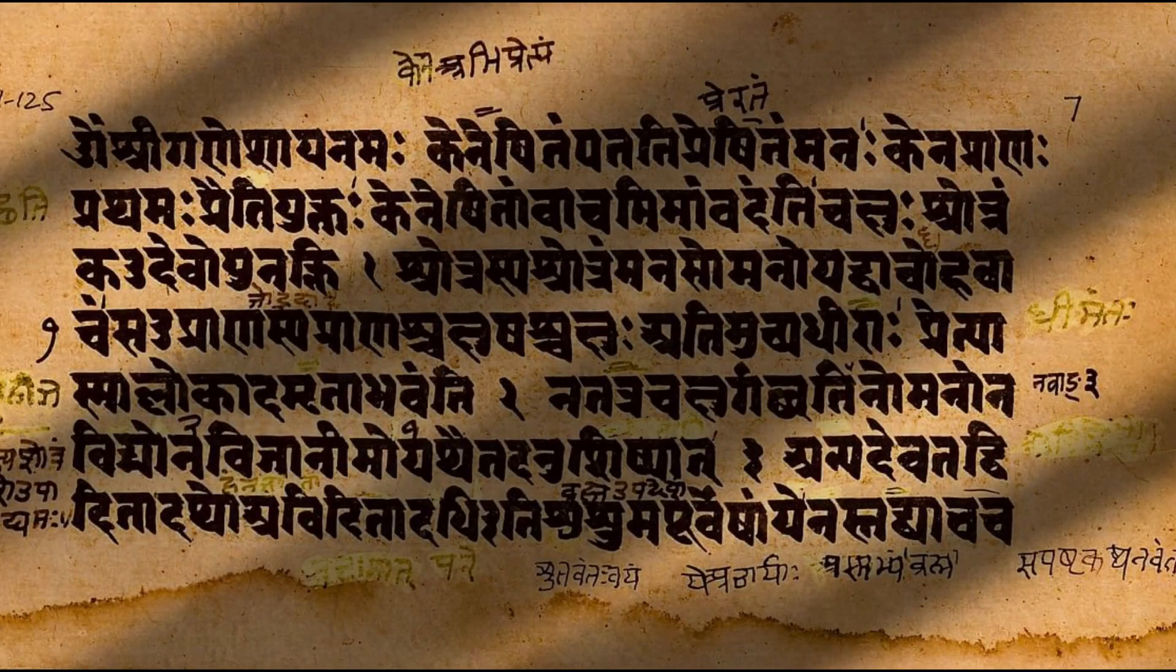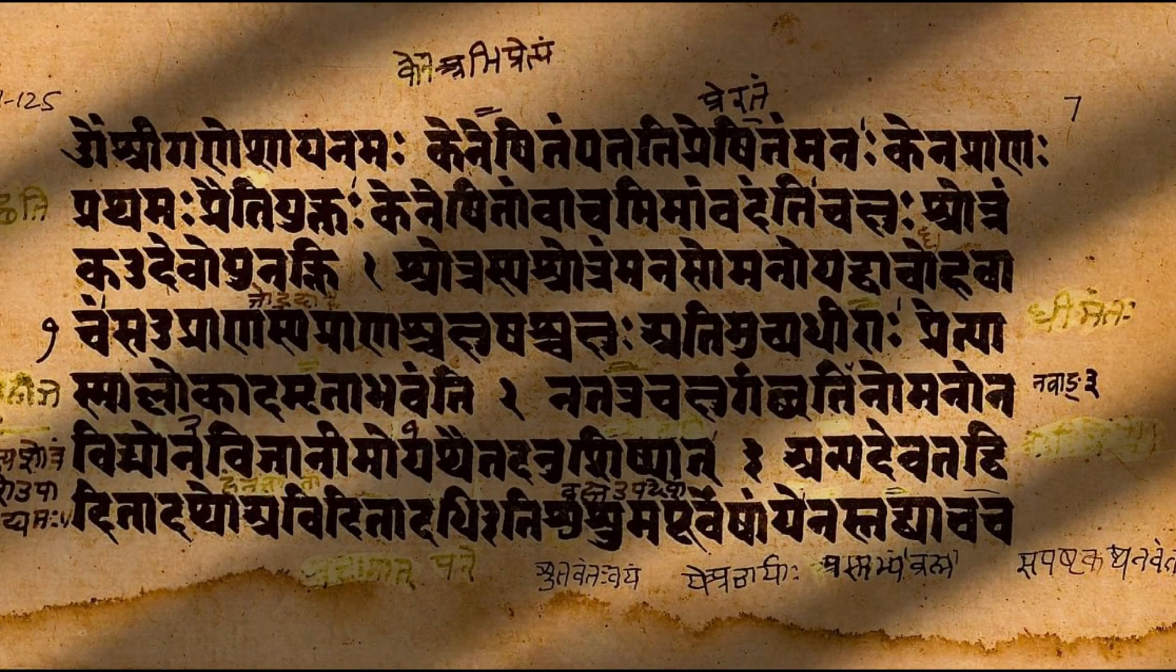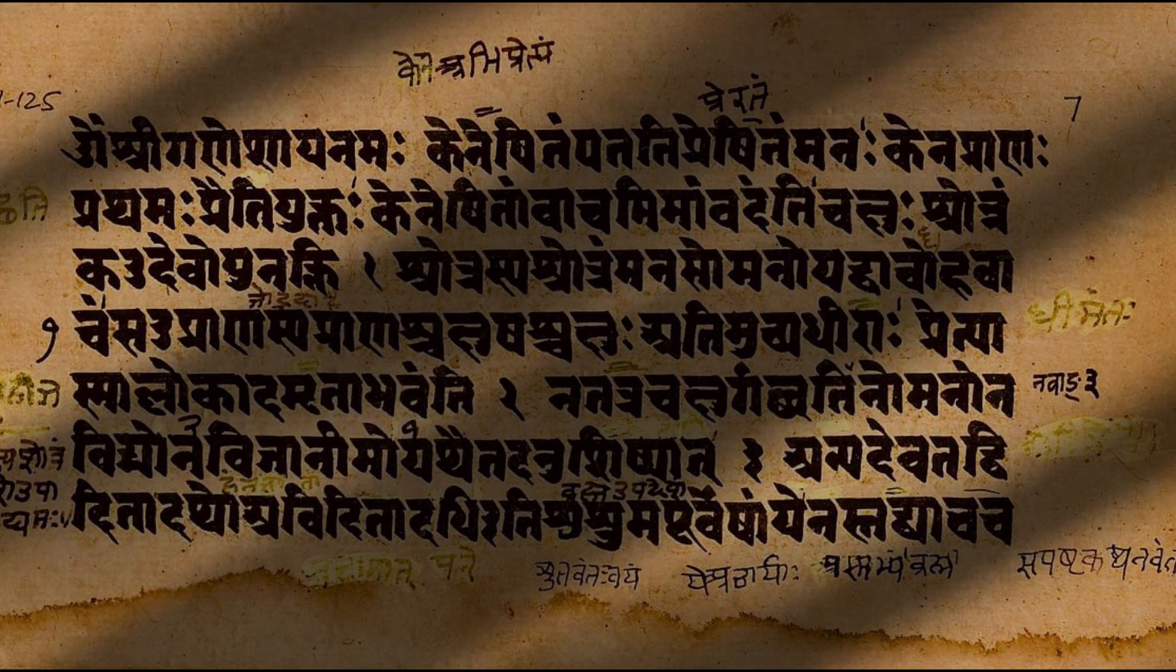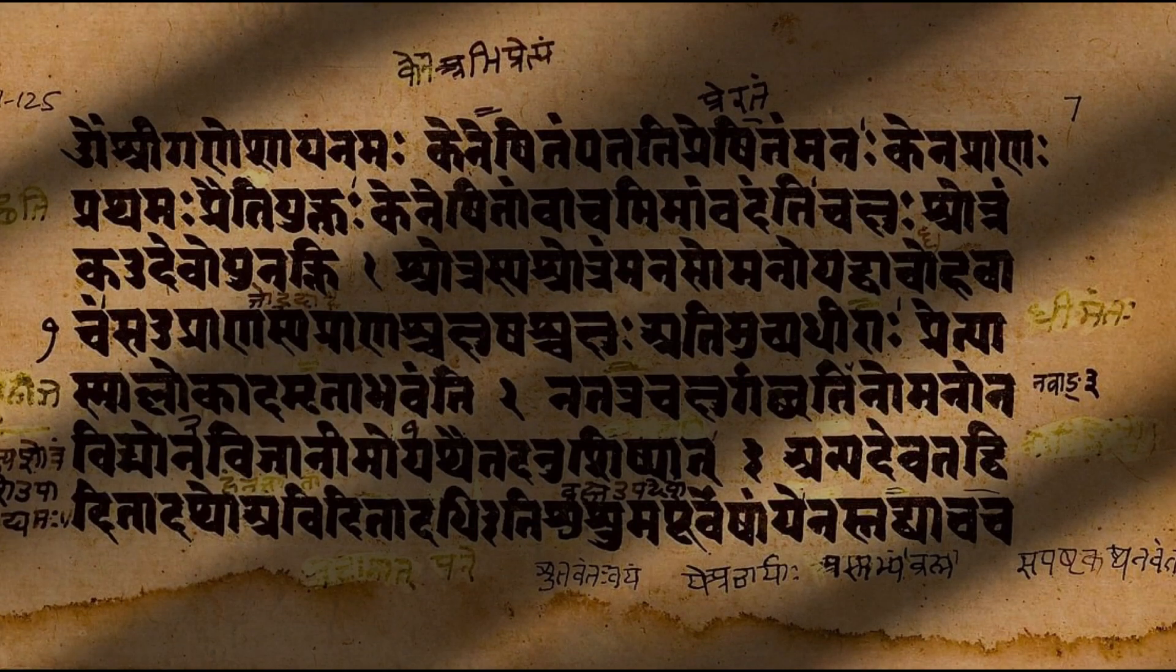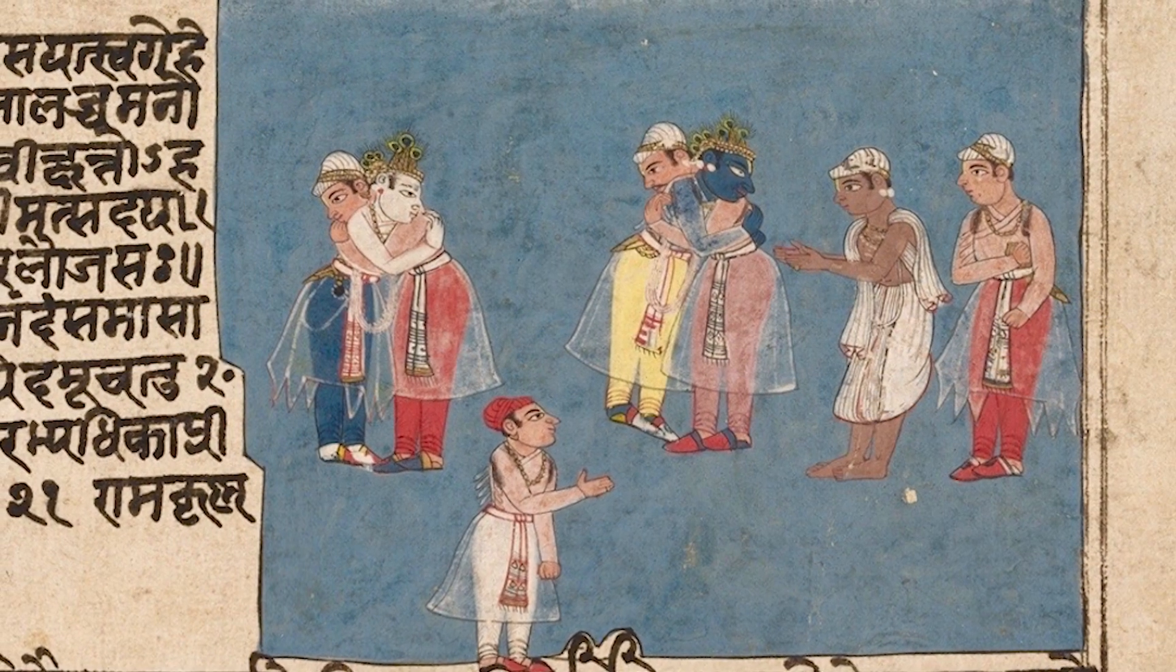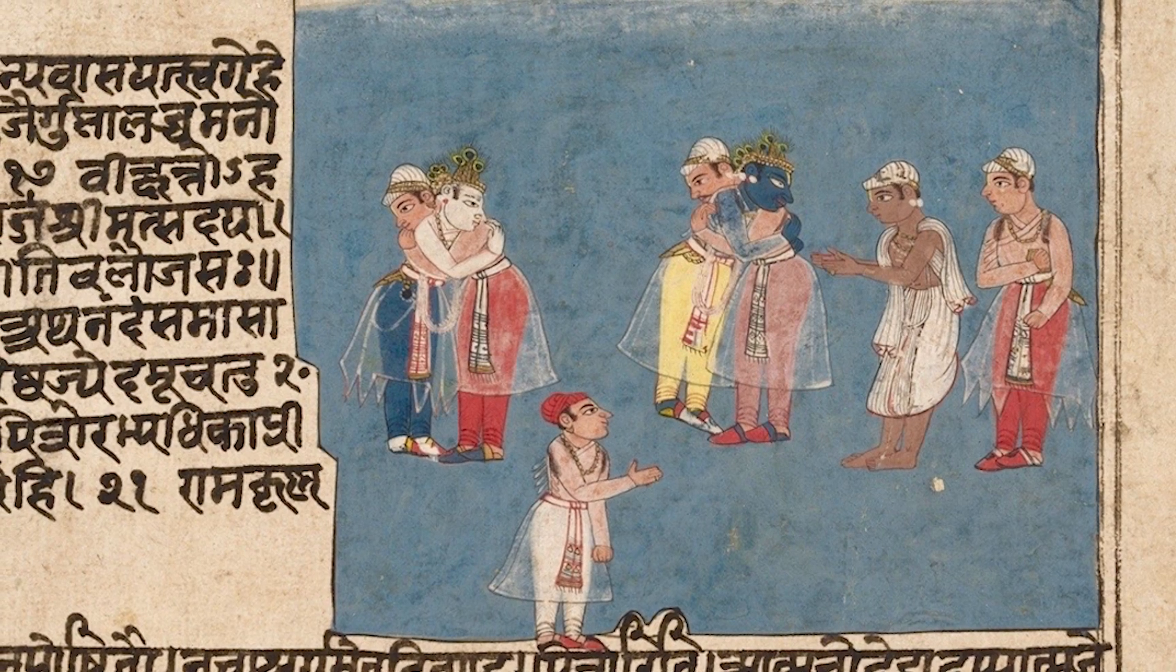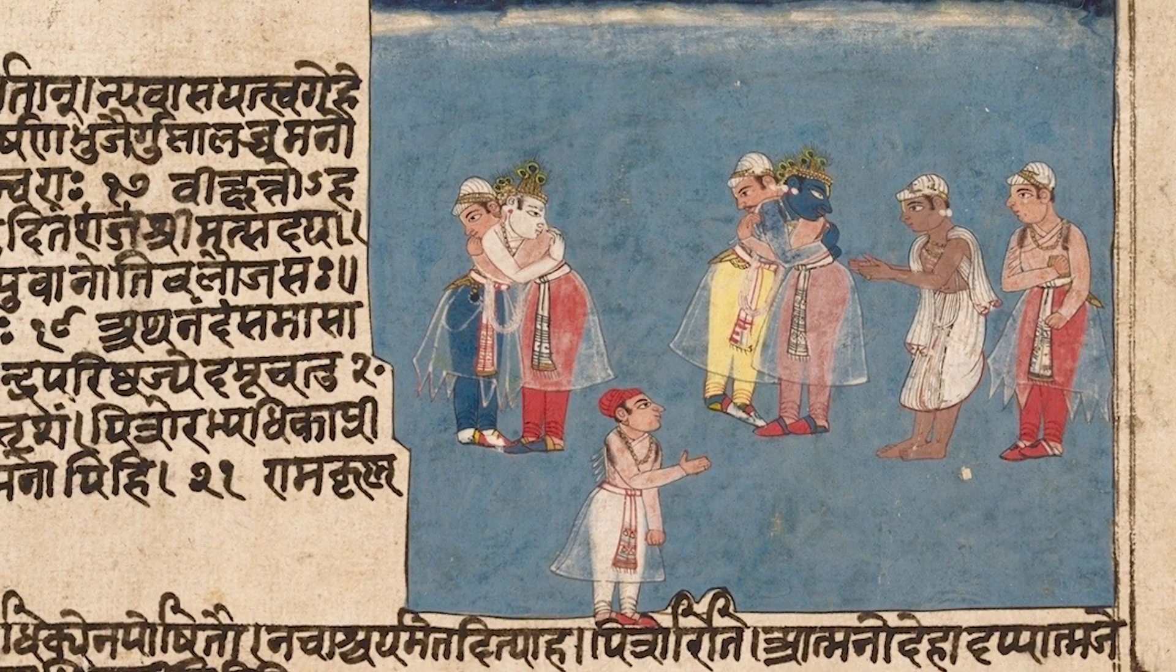The main sacred texts of Hinduism are the Upanishads, written in Vedic Sanskrit, of which there are more than 200, with 10 being the most important, called the Principal Upanishads. These are the basis of Hindu belief, but more texts were added over time. Later, we get the Indian Puranas, which cover legends, folklore, and many other subjects. In the Bhagavata Purana, probably written between the 8th and 10th century CE, the nature of the universe is described in this way.